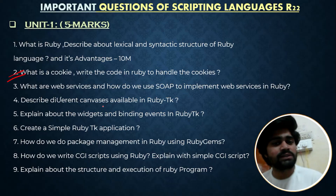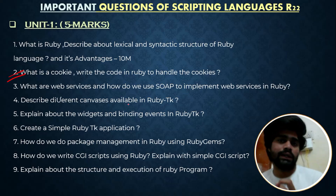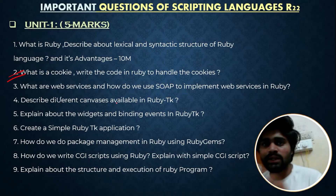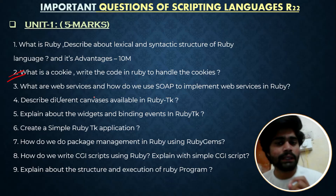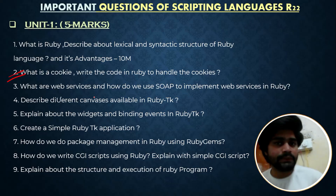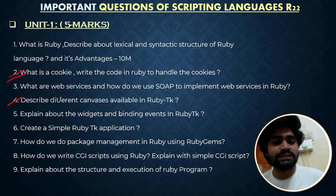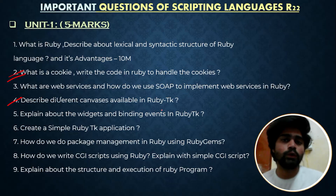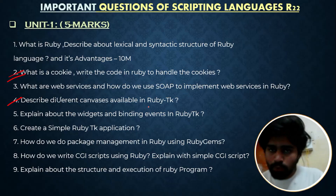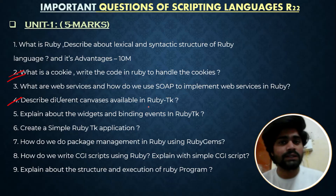Describe the different canvases available in the Ruby toolkit. There is a toolkit in Ruby — similar to how Python has the Tkinter library. You need to learn how we represent the canvas and what different types of canvases there are. Next, explain about the widgets and binding events in the Ruby toolkit — you have to study the toolkit thoroughly.